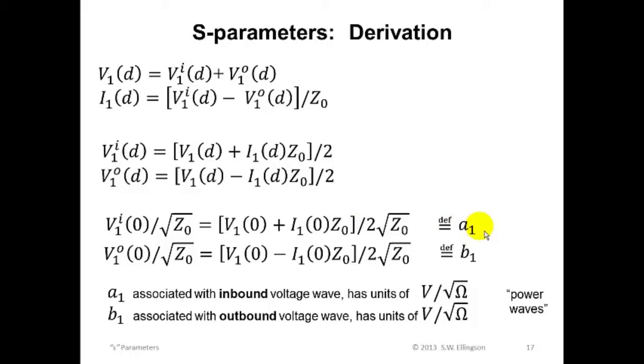So what are A sub one and B sub one? Well, frankly, they have no physical interpretation. And they're defined really just for our convenience. However, it is worth noting that A sub one and B sub one are associated with the inbound and outbound power waves, respectively. And that A sub one and B sub one both have units of square root of power. In other words, voltage over the square root of impedance or the square root of power.